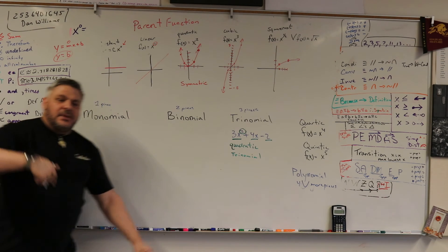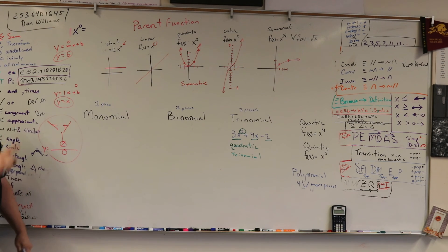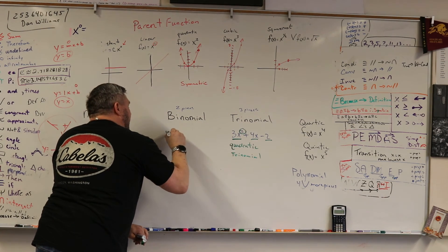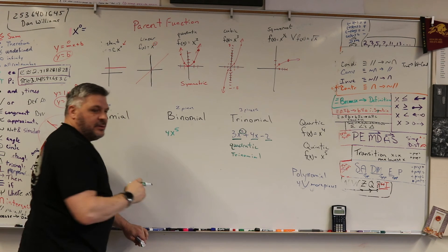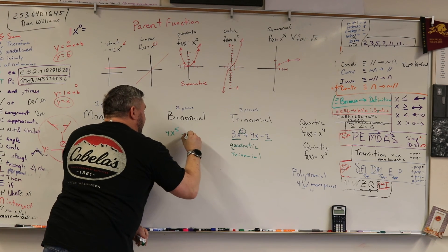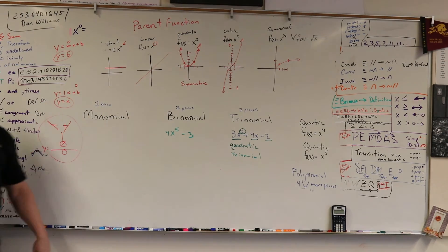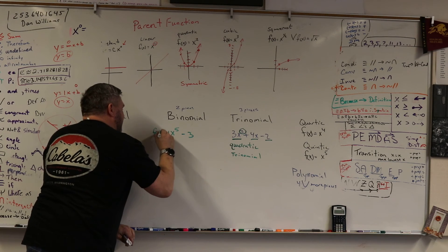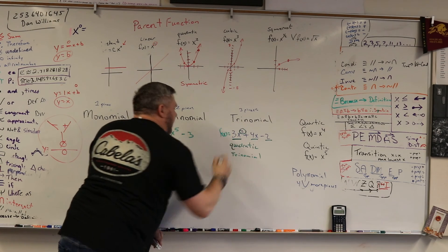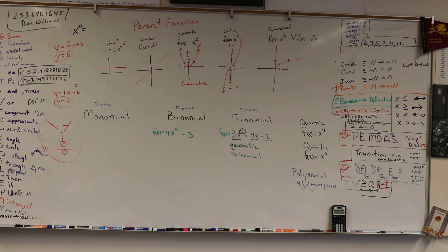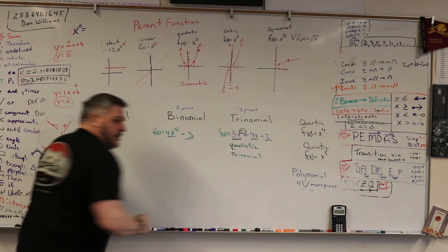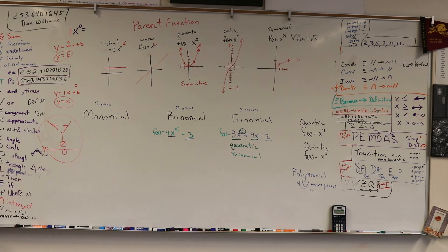So in a binomial, it's going to have two pieces. So I'm going to give you a hard one here. All right, here we go. So 4x to the fifth minus 3. What is that? So we're going to say that f of x equals this, because that is usually what happens, or y equals. So we know it's two pieces. So then what? Is it quadratic?